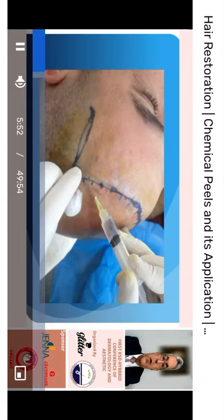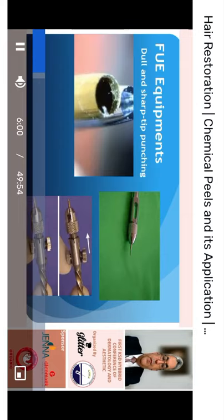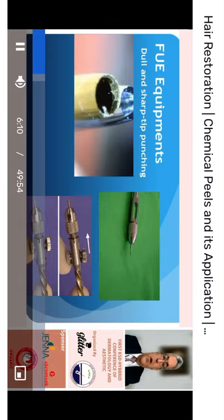This photo shows the administration of anesthesia to the recipient side. After anesthesia, we start harvesting the follicular units using special punches. There are two types: dull and sharp. We begin with the manual punching method, which is time-consuming, although it is still used in some clinics.